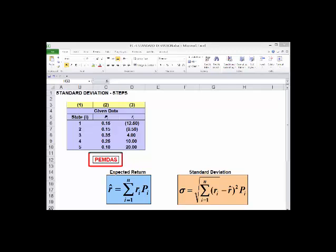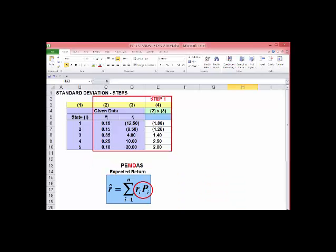We're going to work through this example. First step, you have to calculate the expected return. First thing we do is the multiply divide. There are no parens, no exponents. We're going to multiply across probability 0.15 times the expected return in that state, minus 12.50, equals minus 1.88.